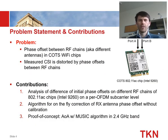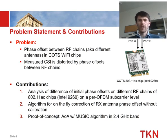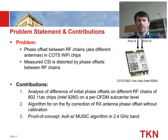This defines our problem statement. There is a phase offset between receive chains and antennas of COTS Wi-Fi chips. Because of that, the measured CSI is distorted and needs to be corrected if you want to run an algorithm like angle-of-arrival estimation.